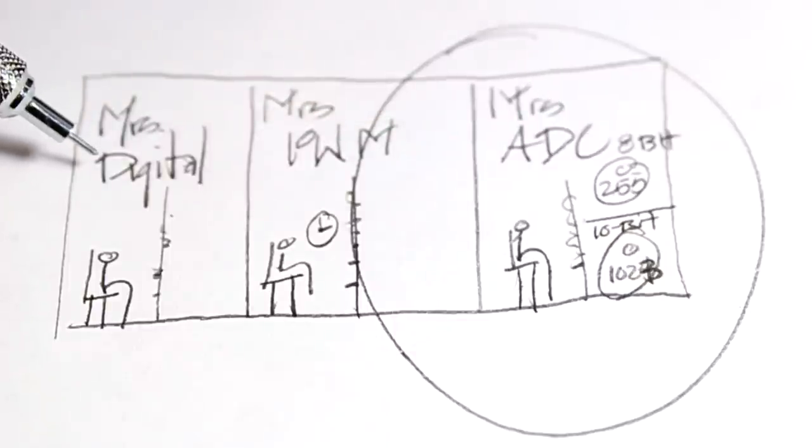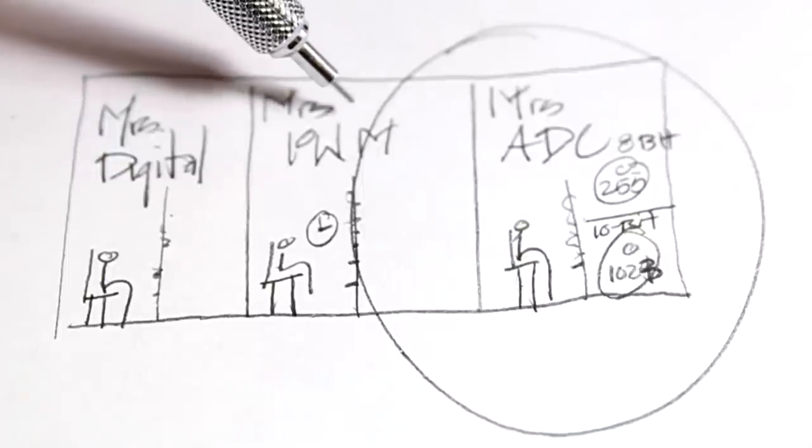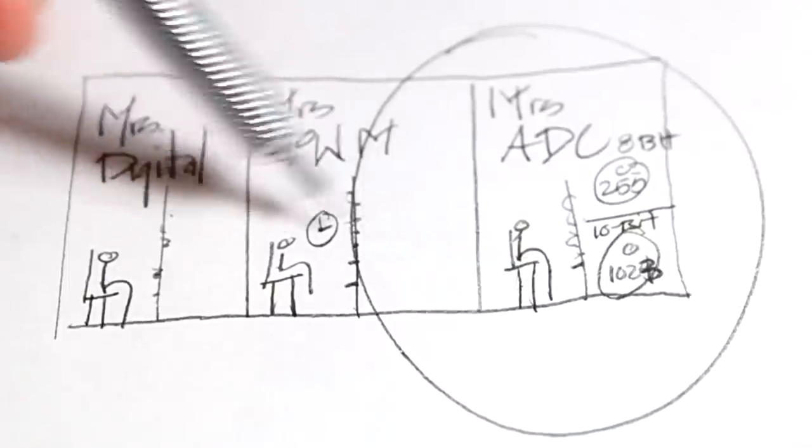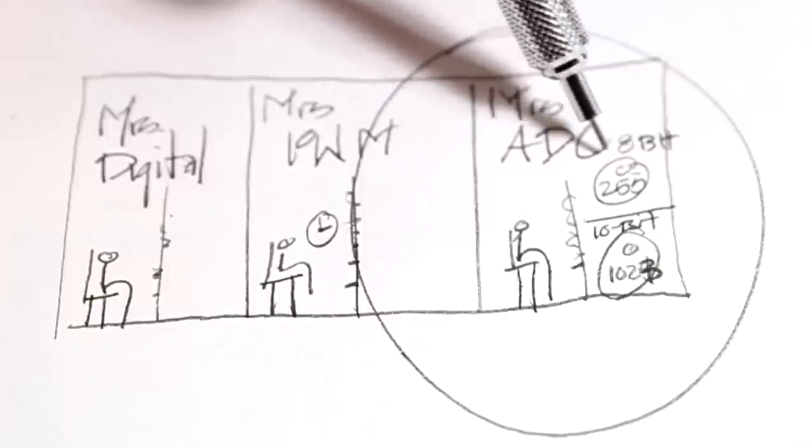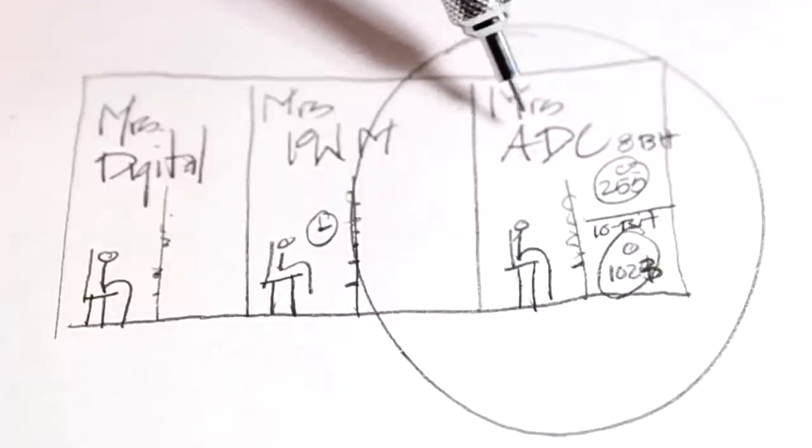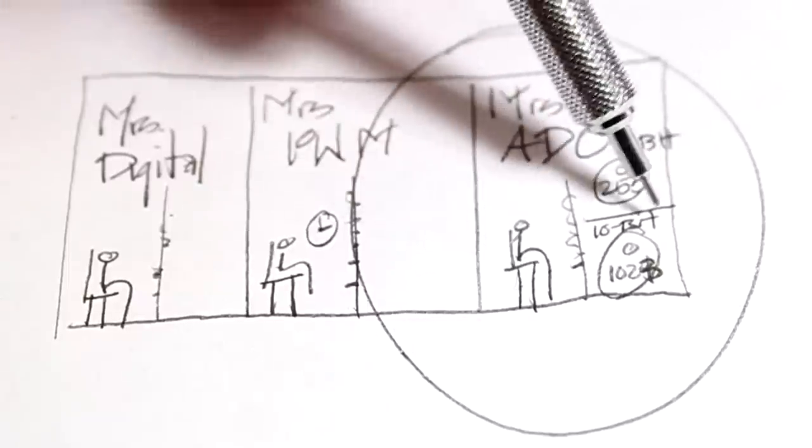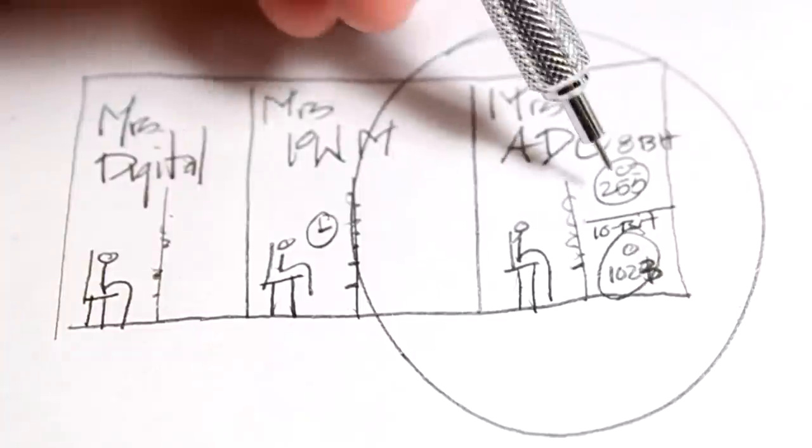You can give it to Mrs. Digital in the form of zeros and ones or 0 volts and 5 volts. You can give it to Mrs. PWM in the form of a timing between pulses. And you can give it to Mrs. ADC in a range of voltages, analog range of voltage. The range depends on what you select. It could be 0 to some volts, let's say 5 volts. And she'll give you a number corresponding to the voltage.